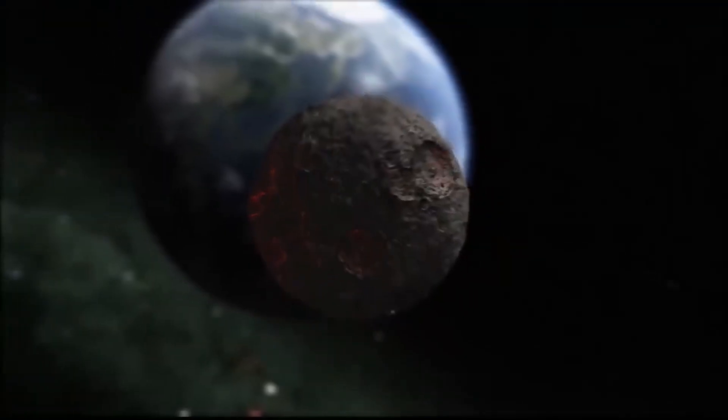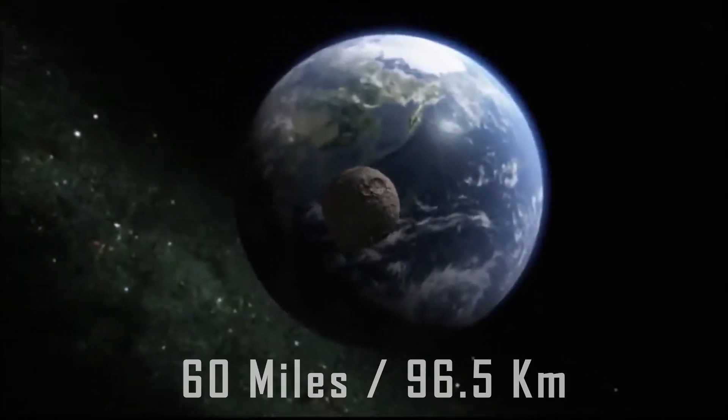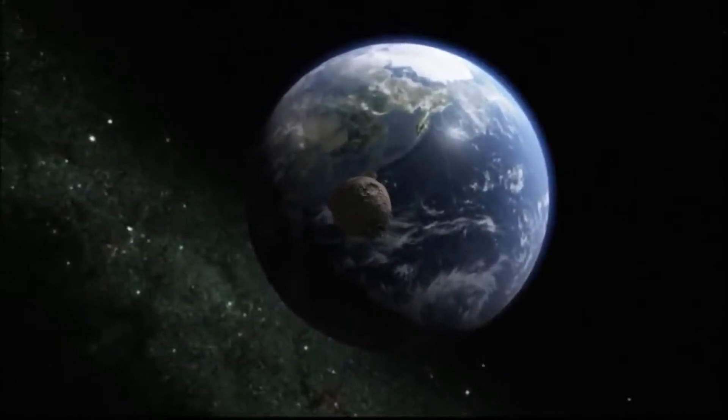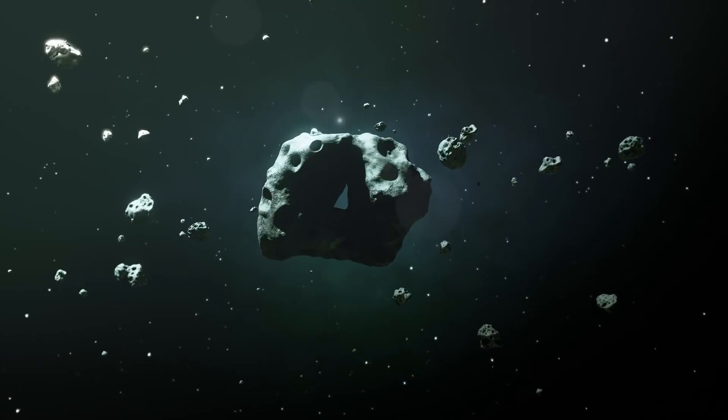NASA scientists say it would take an asteroid 60 miles wide to totally wipe out life on Earth. The only way to eliminate the threat of an asteroid hitting the Earth is to detect them and divert them from their course.